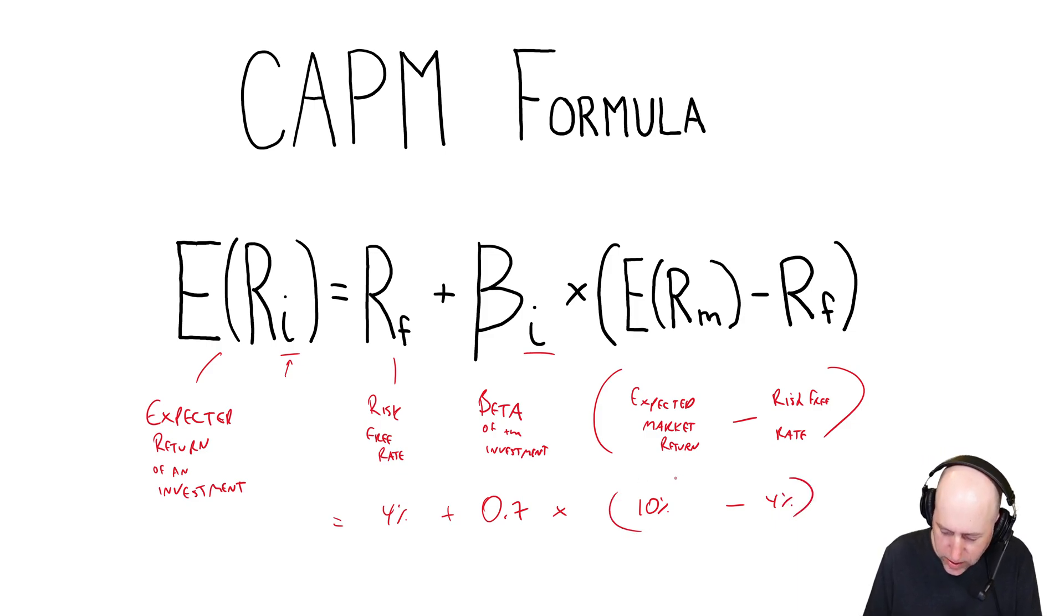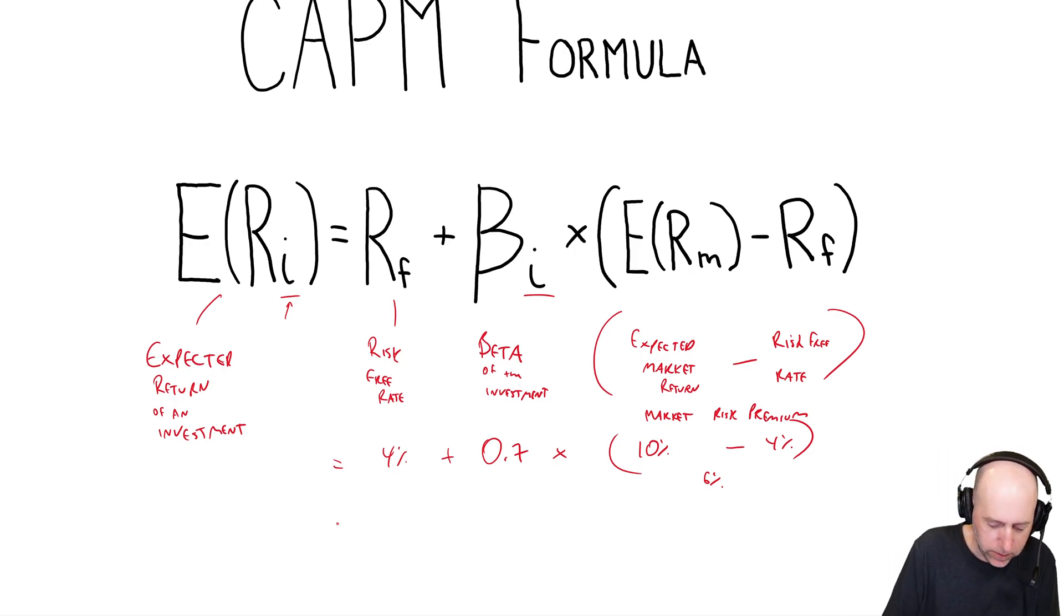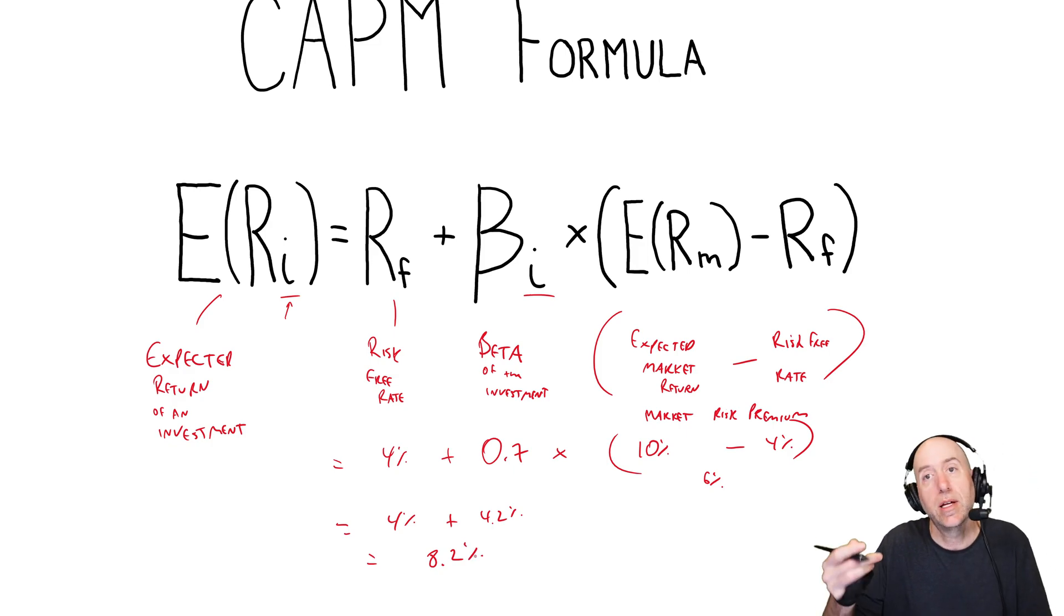They call this, what's in brackets, the market risk premium. And the idea is, how much money are you getting by having your money invested in the markets as opposed to buying U.S. treasury bills or something risk-free? And the answer is, you're getting a 6% bonus by taking on risk. That's why they call it a market risk premium.